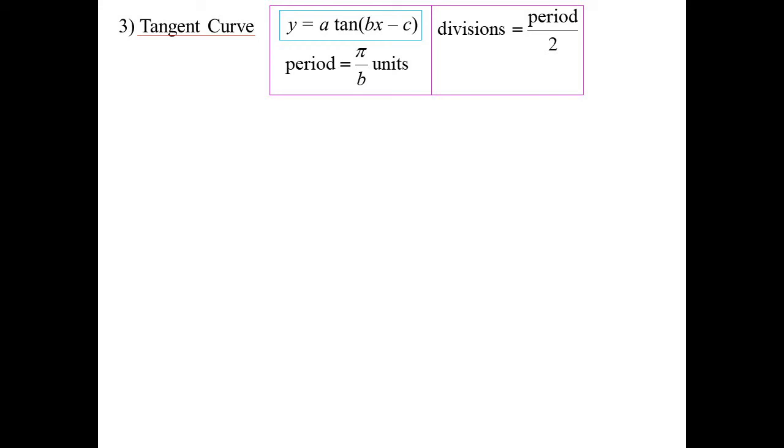So now, my divisions will be the period divided by 2. Because, again, think about drawing a tan curve. What do you do? You go, x-intercept, asymptote. x-intercept, asymptote. x-intercept, asymptote. So, basically, there's two things happening as you go along. So we divide period divided by 2.